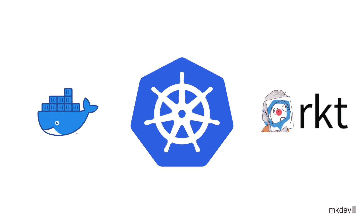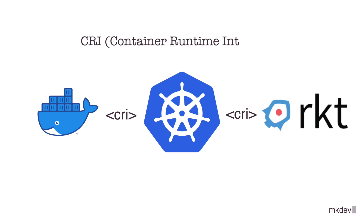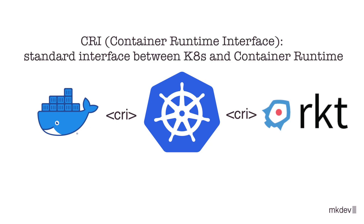That's how the Kubernetes Container Runtime Interface appeared back in 2016. The idea of CRI is that instead of bundling and supporting many different container runtimes, those runtimes would simply need to comply with the CRI standard. Kubernetes, in return, only had to maintain and support this standard, ensuring any standard-compliant runtime would work well.